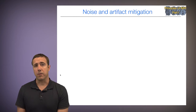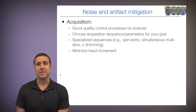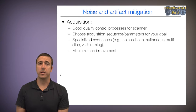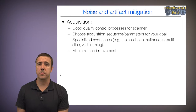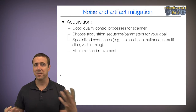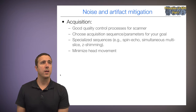So let's talk a little bit about noise and artifact mitigation. The first line of defense is acquisition. We need good quality control processes for the scanner to make sure that it's working correctly. Things do change over time, hardware goes bad, things come loose on the table and can create a ton of noise.